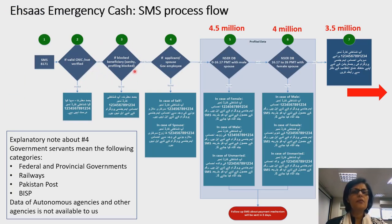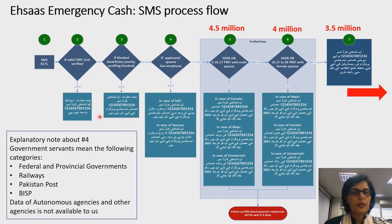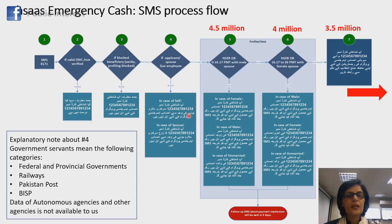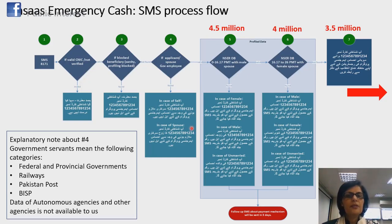There are 820,000 who have left the BISP database. If people receive a message that they are not in the third database — which is a government database — and if someone has information that they are eligible, and if a spouse is a female government servant, they should message that they are not part of this emergency program.